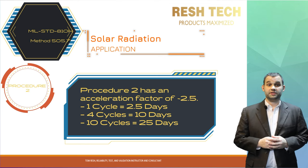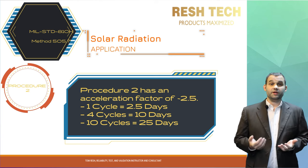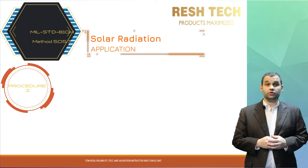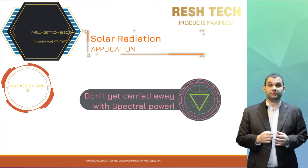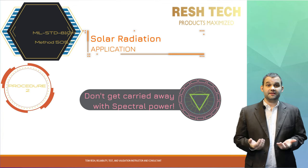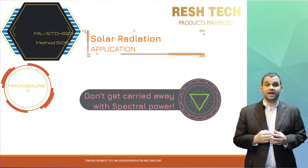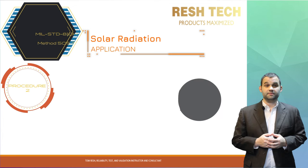This means that one cycle simulates two and a half days of natural exposure. Four 24-hour cycles would simulate 10 days, 10 cycles would simulate 25 days, and so forth. MIL-STD-810H cautions not to increase the spectral power any higher than recommended in an attempt to accelerate the test further, because the failure modes produced have diminishing returns and you will end up with unrealistic results or failure modes for the materials or system you are testing.